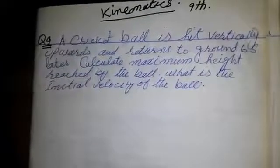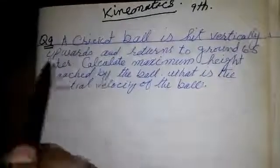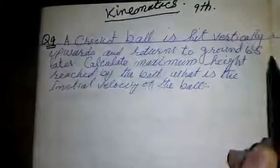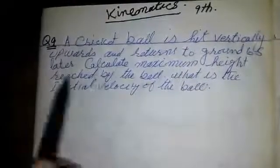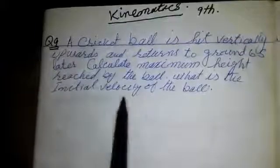Bismillahirrahmanirrahim. Today we are going to solve a word problem from 9th physics. A cricket ball is hit vertically upwards and returned to ground 6 seconds later. Calculate maximum height reached by the ball. What is the initial velocity of the ball? Let's solve it.